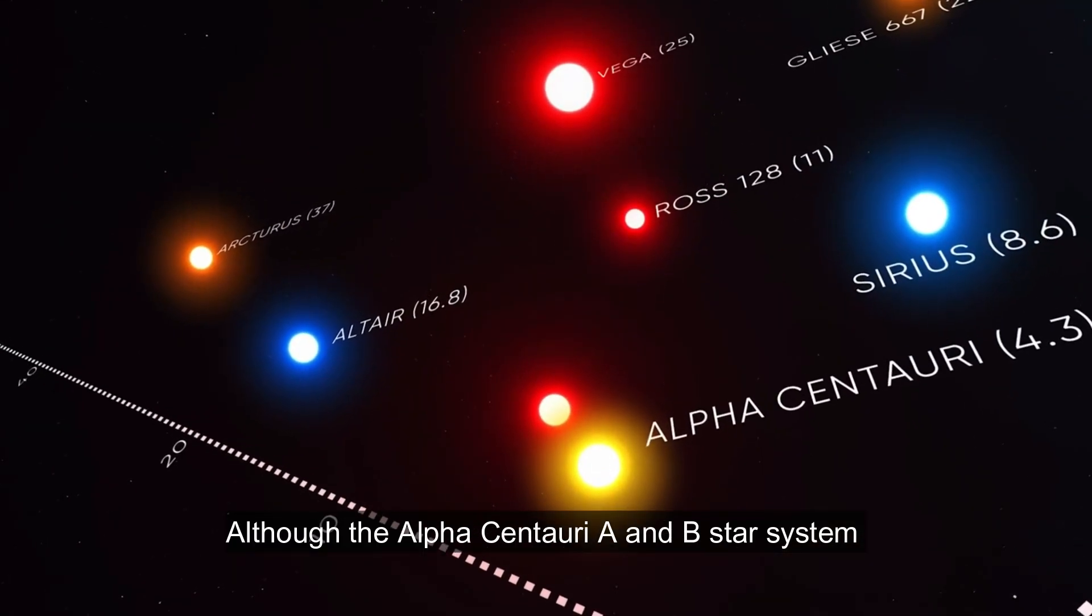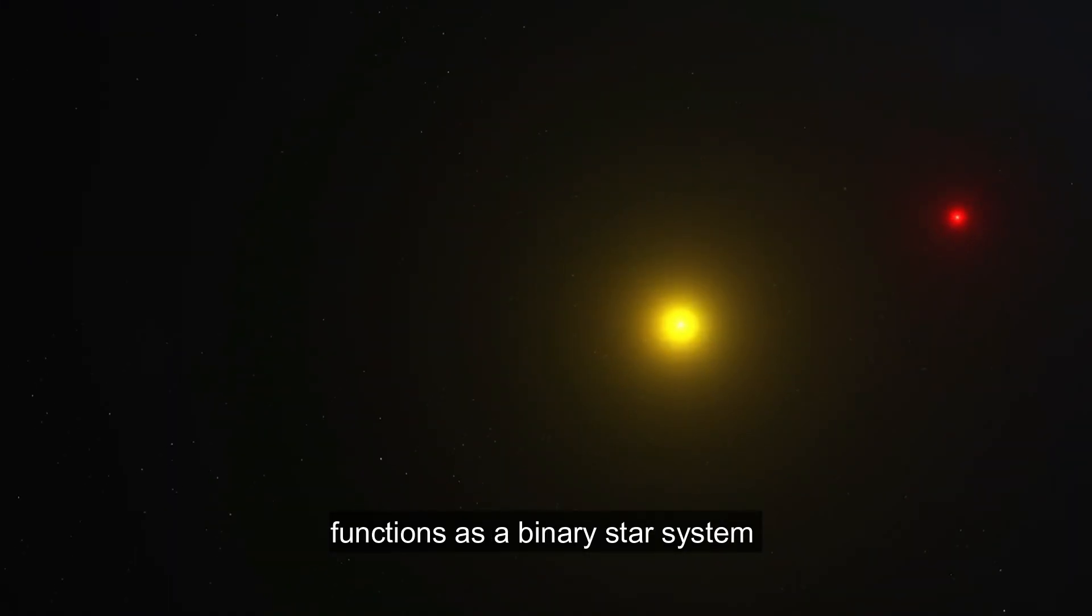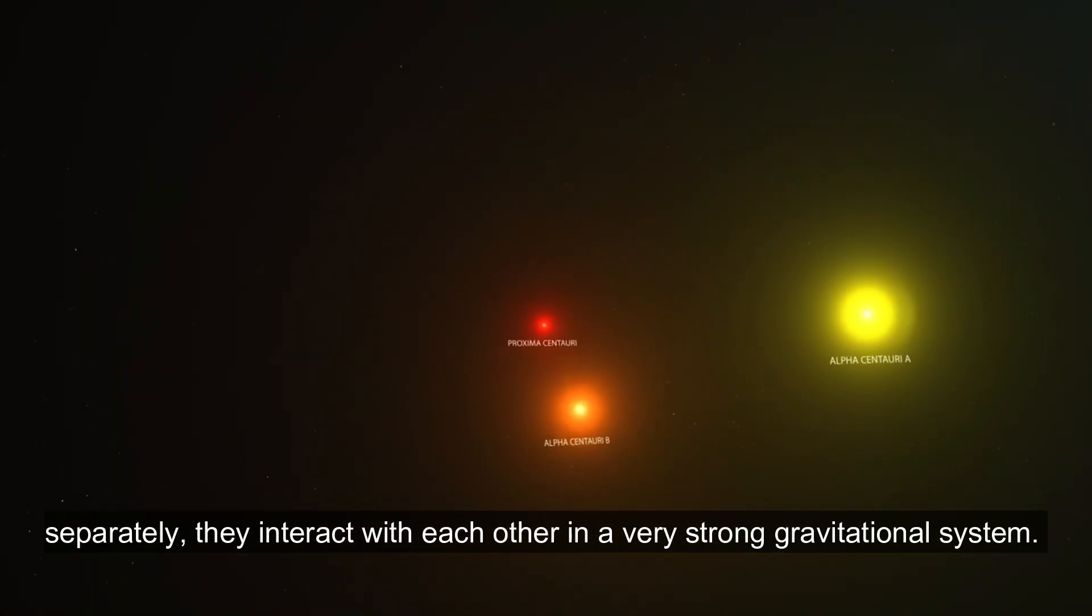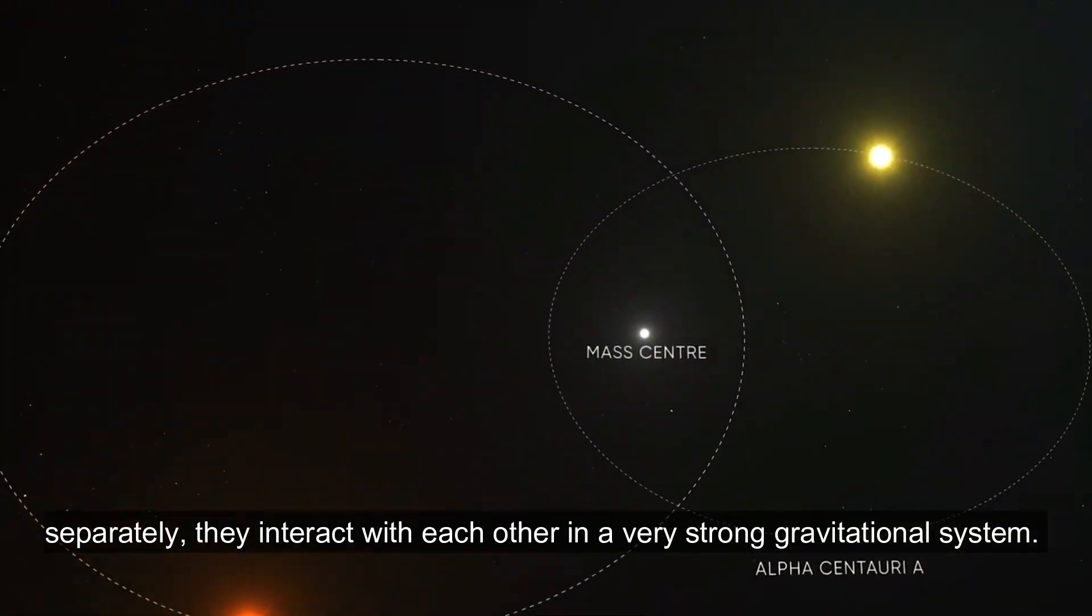Although the Alpha Centauri A and B star system functions as a binary star system separately, they interact with each other in a very strong gravitational system.